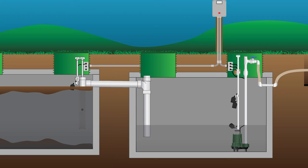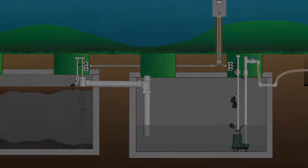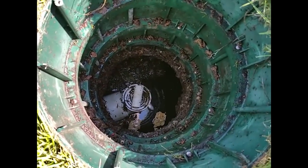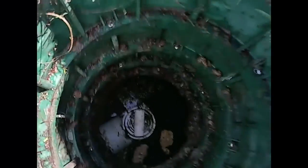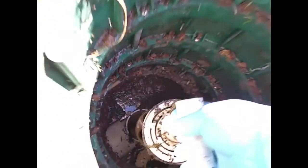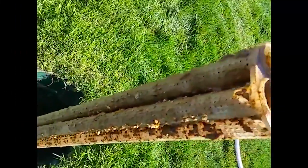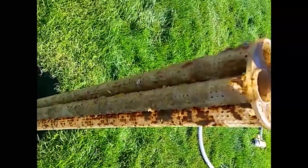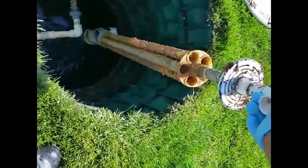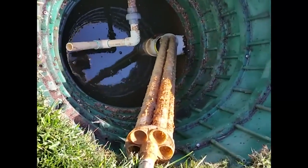Here's a short video showing me cleaning a four-inch effluent filter in an Advantec system. This filter does not have the handle extended into the riser, so I have to reach way down into the tank — it would be a lot easier if it did. It's not a bad idea to glove up. This one is pretty dirty, even though it was just cleaned in June — it is now middle of September.